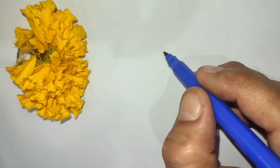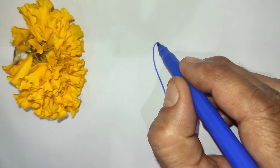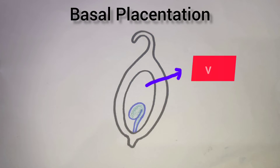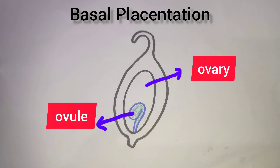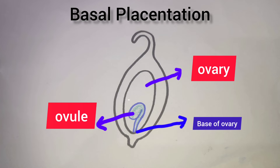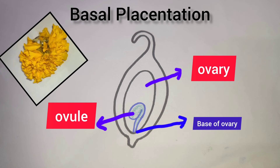In basal placentation, a single ovule is attached at the base of the ovary. Basal placentation is found in marigold flower and in a number of other species of family Asteraceae.